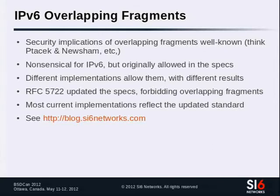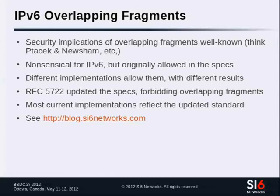RFC 5722, published about a year or two ago, forbids the use of overlapping fragments in IPv6: if you receive overlapping fragments, you must drop them both. Most current implementations we checked already implement RFC 5722. Our blog contains a detailed table of all the tests we performed with different implementations, assessing their fragment reassembly policy — including not just whether they allow overlapping fragments, but whether they prefer the first or last copy when they do.